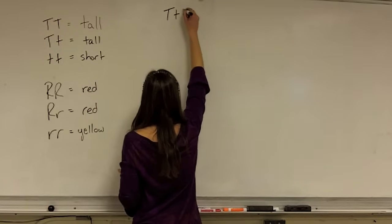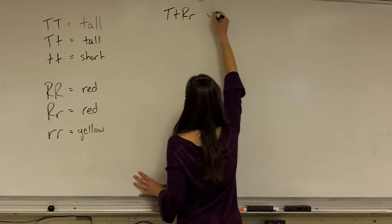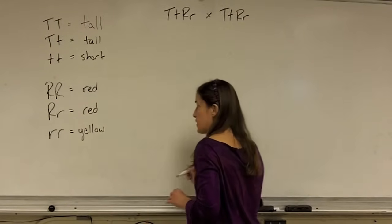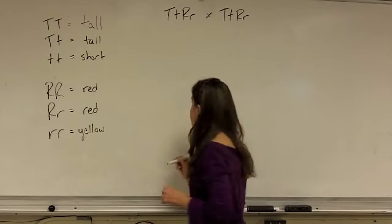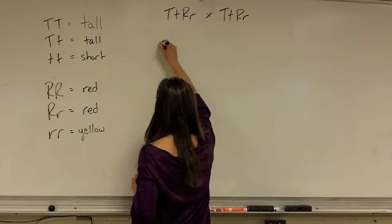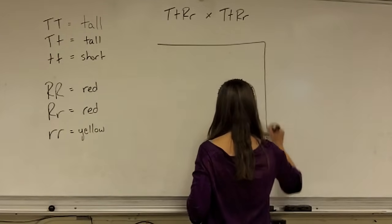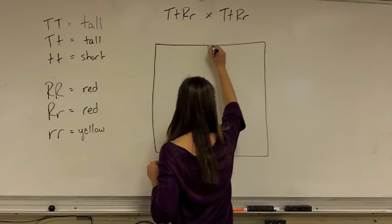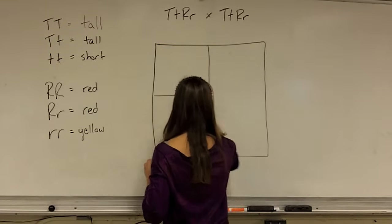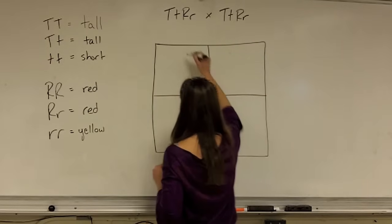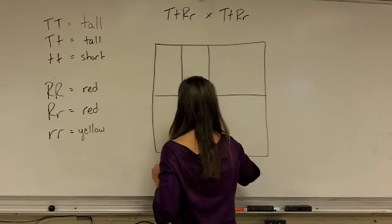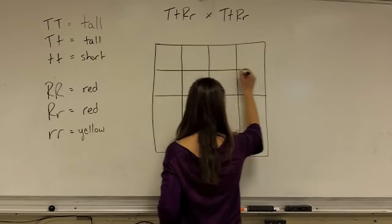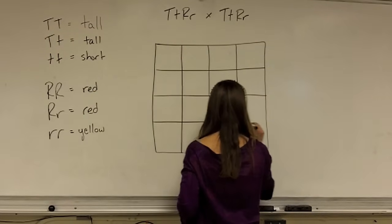So the parents are going to be big T, little t, big R, little r, crossed with big T, little t, big R, little r. To make a dihybrid cross, you need to have a 4x4 Punnett square. The easiest way to make a 4x4 Punnett square is to start with a large square, first divide it into a 2x2 square, and then divide that in half both vertically and horizontally. And then you get a nice neat 4x4 square.